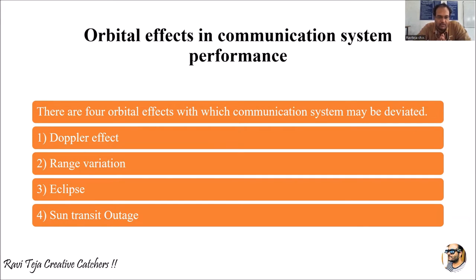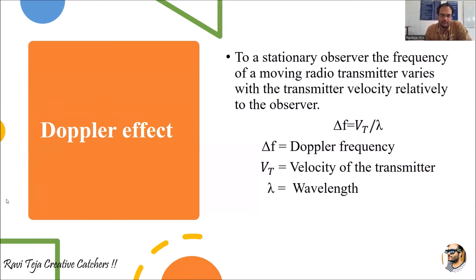Let's see what this Doppler effect is, how range is varying, what eclipse means with respect to satellite communication, and what sun transit outage means. Coming to the Doppler effect — in previous subjects like electromagnetic wave propagations and several communication system subjects you might have already learned about the Doppler effect.